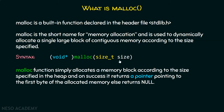The size needs to be specified and malloc will allocate a memory block accordingly. On success, it returns a pointer pointing to the first byte of the allocated memory. Else, it returns null. On success it returns a void pointer; if it fails somehow, then it will return null.